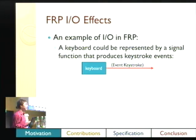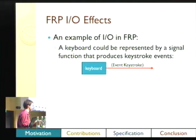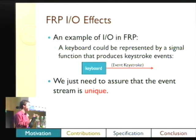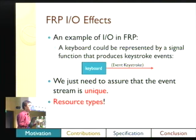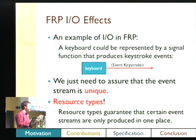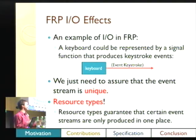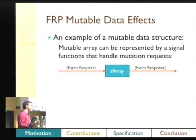For example, we can have a keyboard — it's a signal function that has an output stream of keystroke events. The problem is we need to make sure that output stream is unique. If you have two keyboard signal functions in your program, you'd have two sets of streams, but you really want a unique ordering of your events. We use something called resource types to guarantee that if you have two signal functions both tagged as being your keyboard, no matter how you compose and manipulate your signal functions, you can be sure they won't both be in the same program. That means for any given resource, you'll have a unique stream.